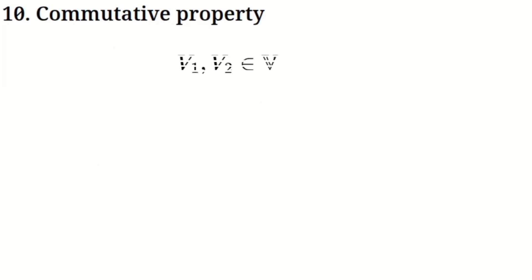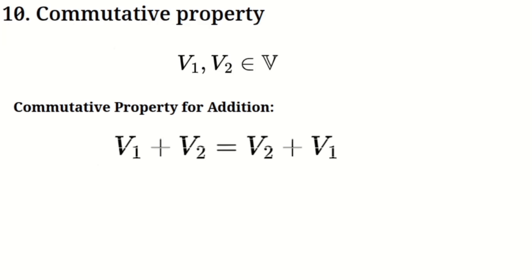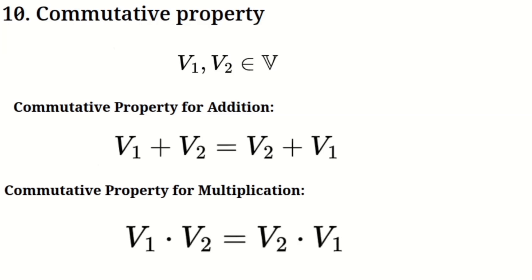Commutative property. Next is the commutative property, which applies to both addition and multiplication. For addition, the commutative property tells us that the order in which we add the numbers doesn't matter. Whether we add V1 to V2 or V2 to V1, the result will be the same — V1 plus V2 equals V2 plus V1. For multiplication, the commutative property tells us that the order of multiplication doesn't matter either. Whether we multiply V1 by V2 or V2 by V1, the result will still be the same.